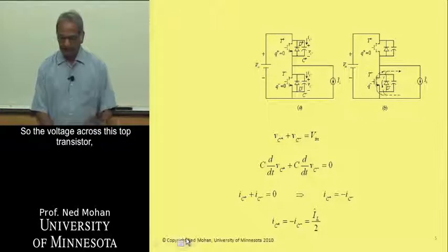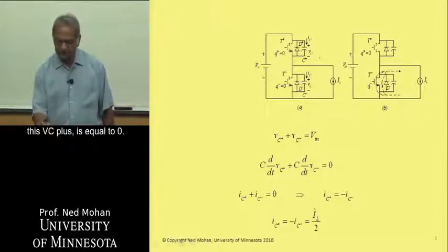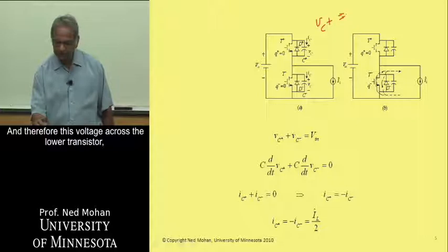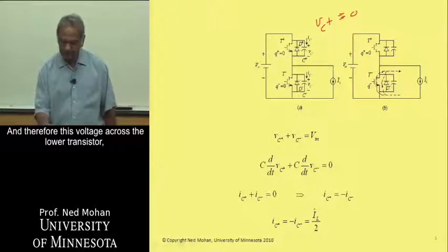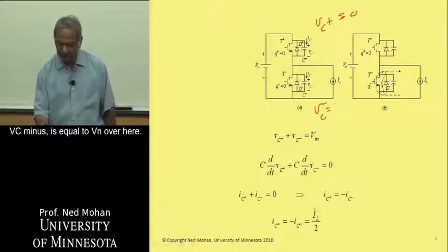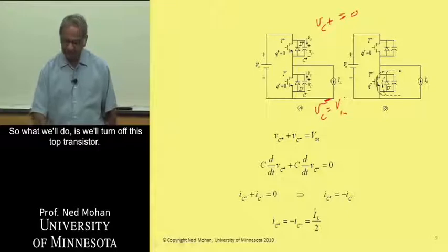and so the voltage across this top transistor, this VC plus, is equal to zero. And therefore, this voltage across the lower transistor, VC minus, is equal to VN over here.